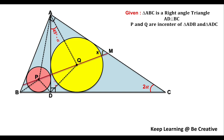In a similar way, we will have angle QDA as 45 degrees, since QD is the bisector of angle ADC which is 90 degrees. Similarly, we can mark angle PDB as 45 degrees and angle PBD as 45 minus α. This angle was 2α, and since triangle ABC is a right angle triangle, angle ABD comes out to be 90 minus 2α, and since PB is the angle bisector, angle PBD is 45 minus α.